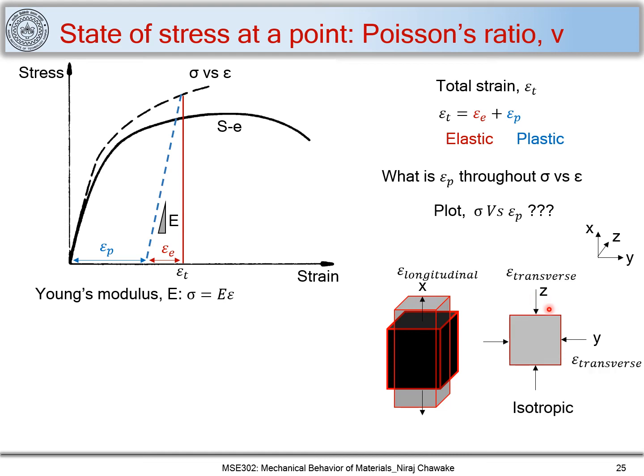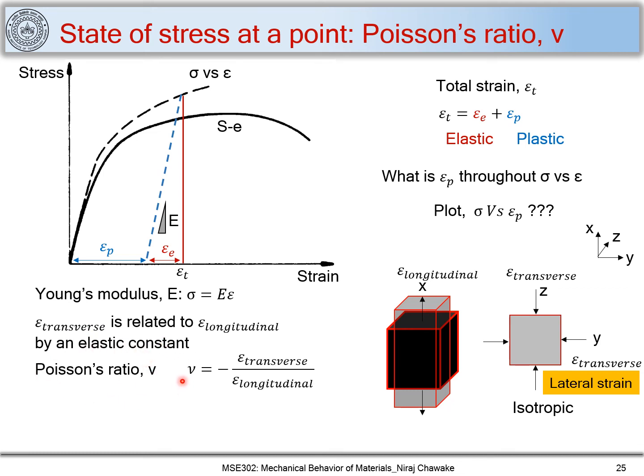So for an isotropic material, these two transverse strains along z and y direction will be equal, as the material being isotropic, because the property will not be dependent on direction. It behaves the same way in both the directions. So for isotropic material, this strain in transverse direction along z direction and y direction is the same. Now I introduce the Poisson's ratio, which relates this lateral strain, I can call it as lateral strain also, lateral strain with a longitudinal strain. So I relate this with an elastic constant called Poisson's ratio.